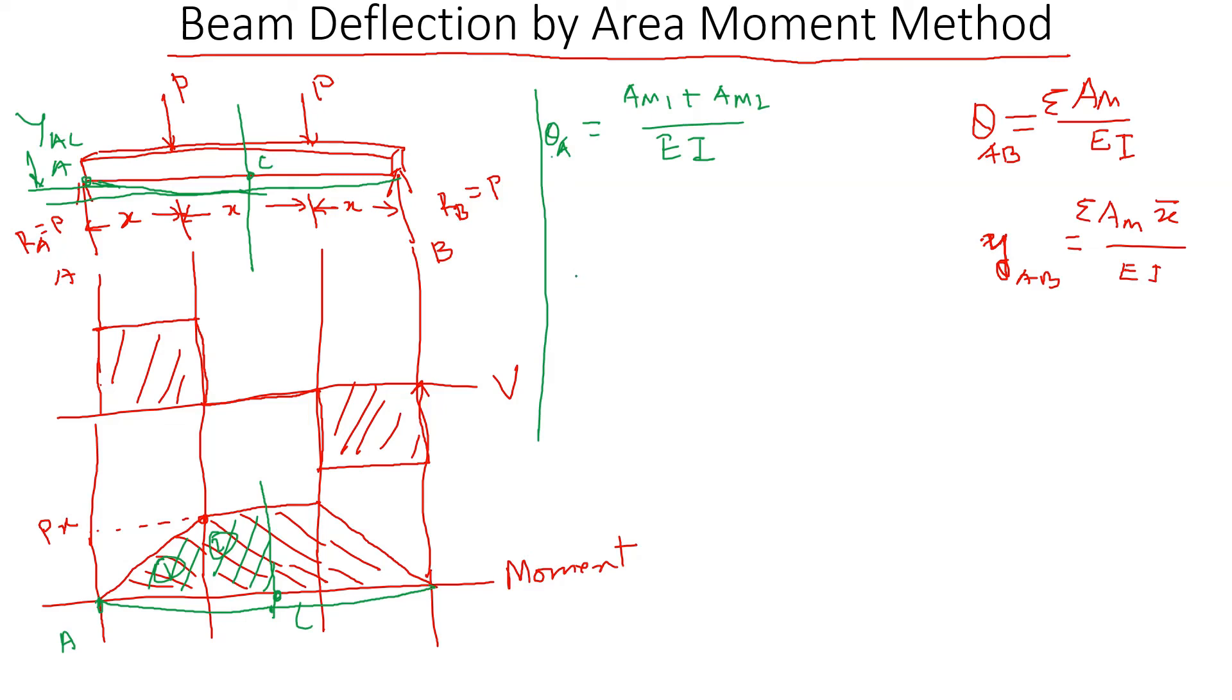For yAB, it is area one times x bar one plus area two times x bar two, divided by EI.